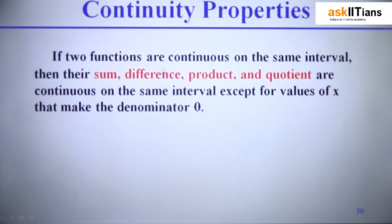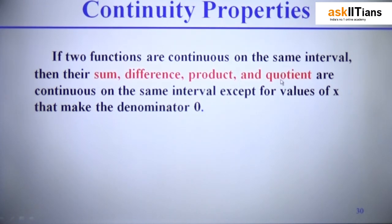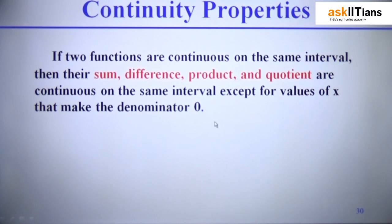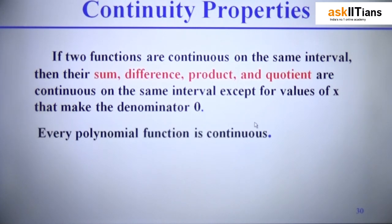There are certain properties followed by continuous functions. If two functions f(x) and g(x) are both continuous at a point x = c, then their sum f(x) + g(x), difference f(x) − g(x), product f(x) · g(x), and quotient f(x) / g(x) are all continuous on the same interval — except for values of x that make the denominator of the quotient zero, as that would be undefined.